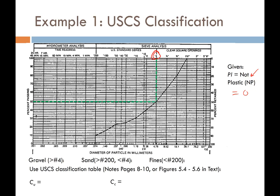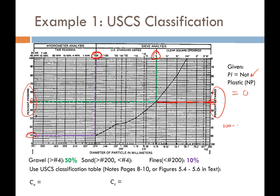The first thing we do is get our percent gravel — the percent retained on the number four sieve. From the curve, 50% passes the number four sieve, so 50% is retained — we have 50% gravel. Next, percent fines corresponds to the number 200 sieve: approximately 10% passes. Then percent sand is 100% minus 50% minus 10% — that gives us 40% sand.